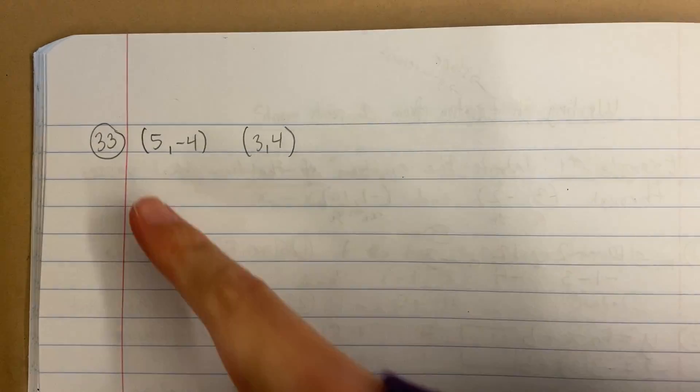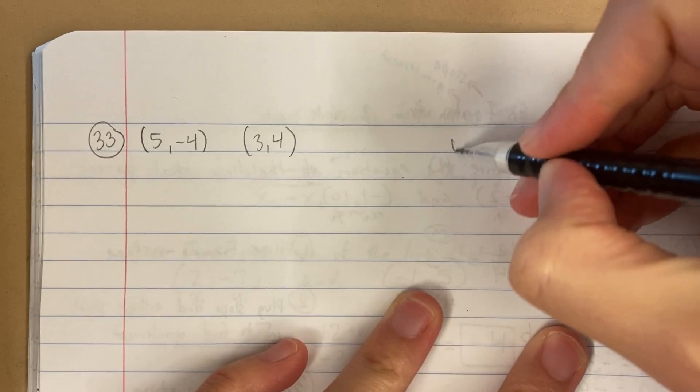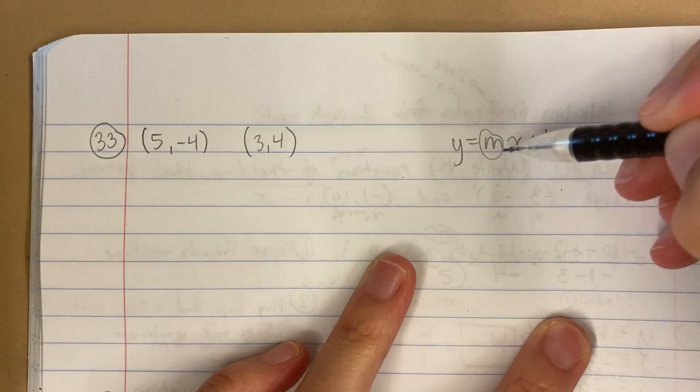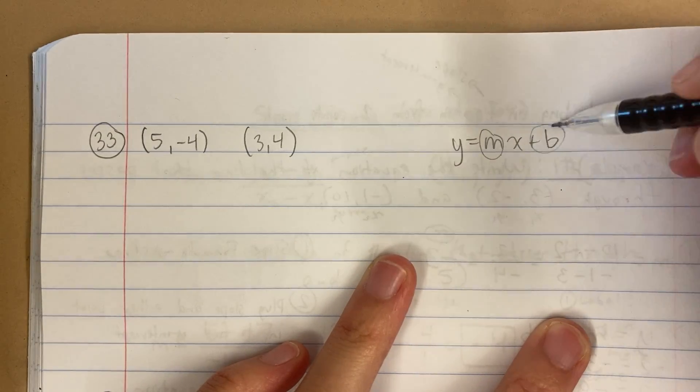I'm looking for the equation of the line that goes through these two points. Remember, when I'm looking for the equation of a line, I'm only looking for two things: the slope and the y-intercept.